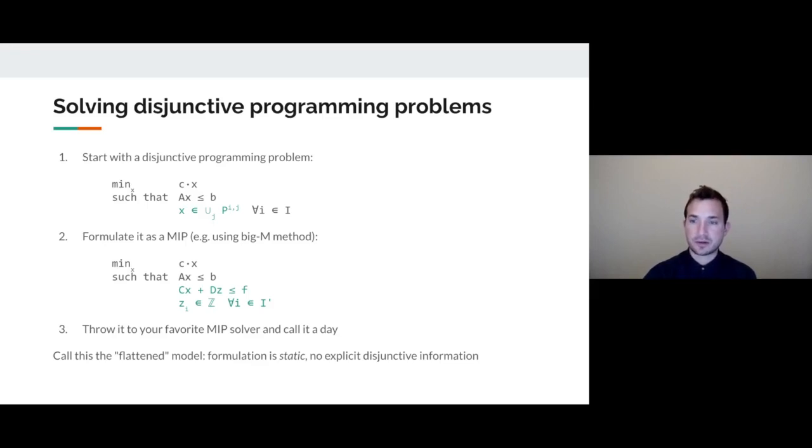I want to point out two things. First, this formulation is static. You write it once before you call the solver, and then you don't change it. Additionally, you're not explicitly passing the disjunctive constraint information. Instead, it's implicitly modeled through whatever mixed-integer programming formulation you decided to use.